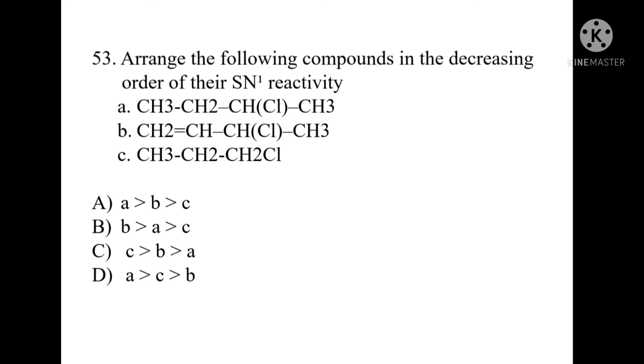The compounds are: chlorine added at the second position of butane, chlorine added to an unsaturated 4-carbon chain, and chlorine added to a 3-carbon system. We need to arrange them in decreasing order of SN1 reactivity.